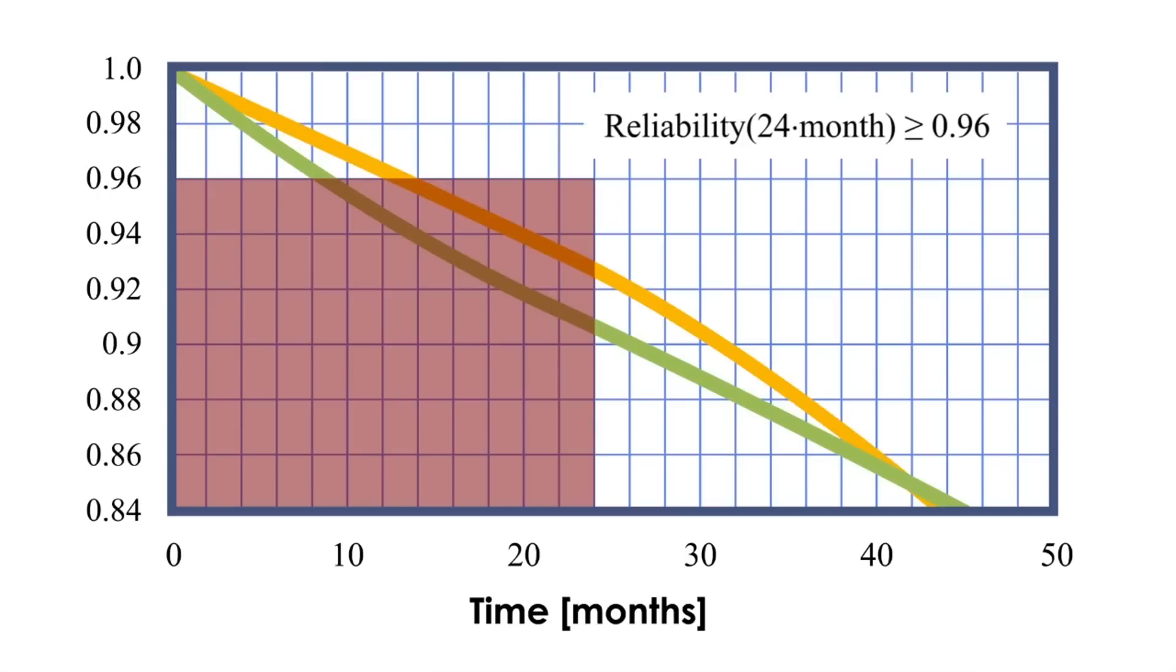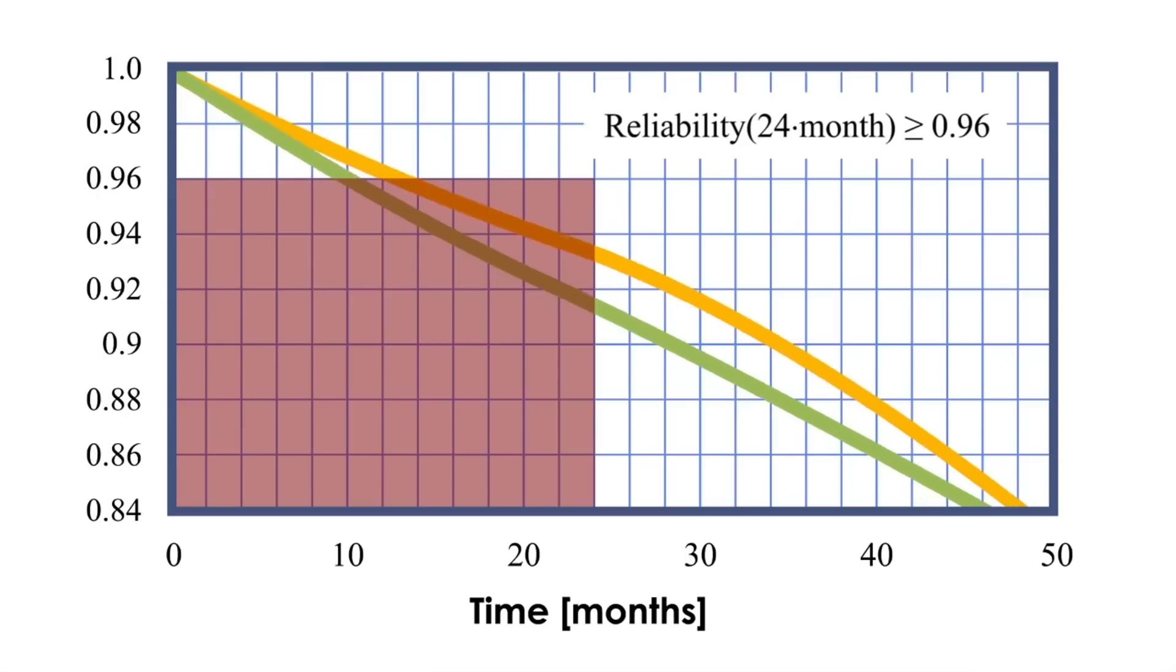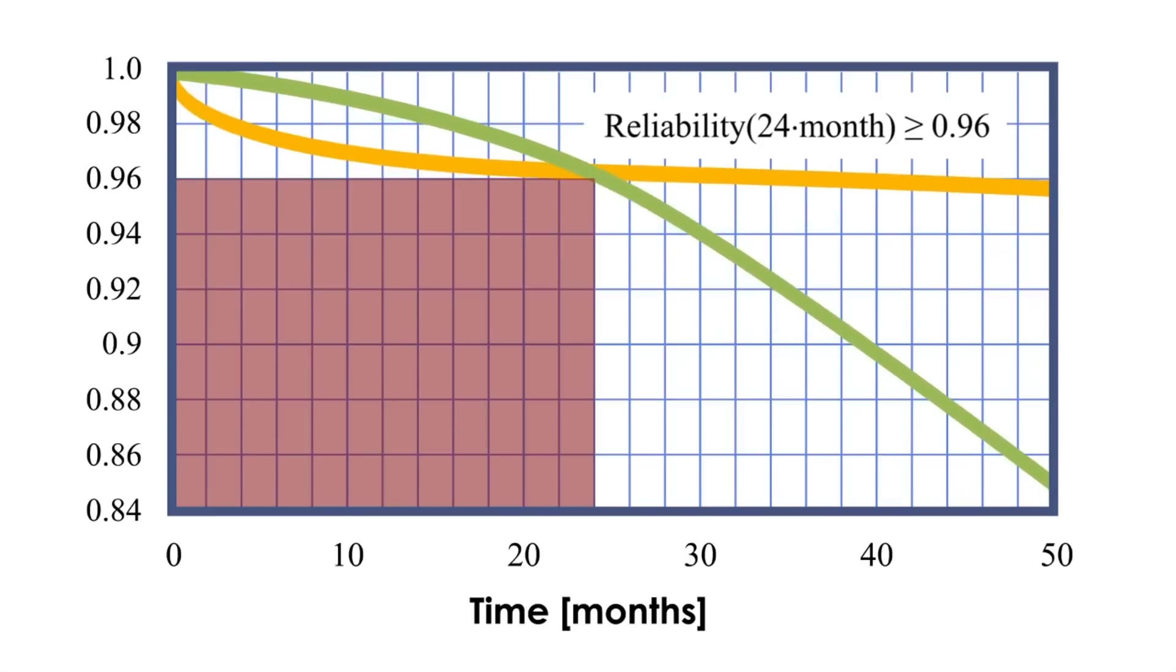We block out a part of the reliability graph to the left and down from the defined point. The reliability curve can now be anywhere in the region, but it must not interfere with the blocked area. Here is a picture of two examples which meet the criteria marginally.